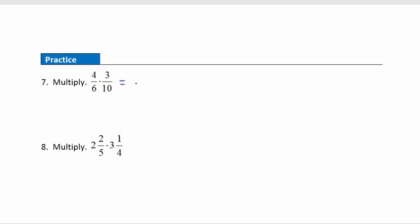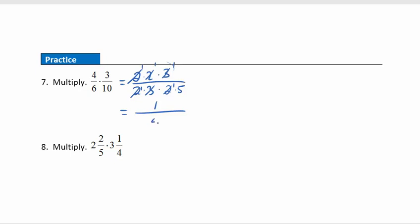Question 7: we're going to start by factoring. 4 factors into 2 times 2. 3 is prime, so we'll leave it. 6 factors into 2 times 3. 10 factors into 2 times 5. Looking at our common factors: a common factor of 2 divides out, another common factor of 2 divides out, and a common factor of 3 divides out. Going across the numerators, everything is divided out, leaving 1 times 1 times 1, which is just 1. In the denominator we have 1 times 1 times 1 times 5, leaving just 5. Our final simplified answer is 1/5.